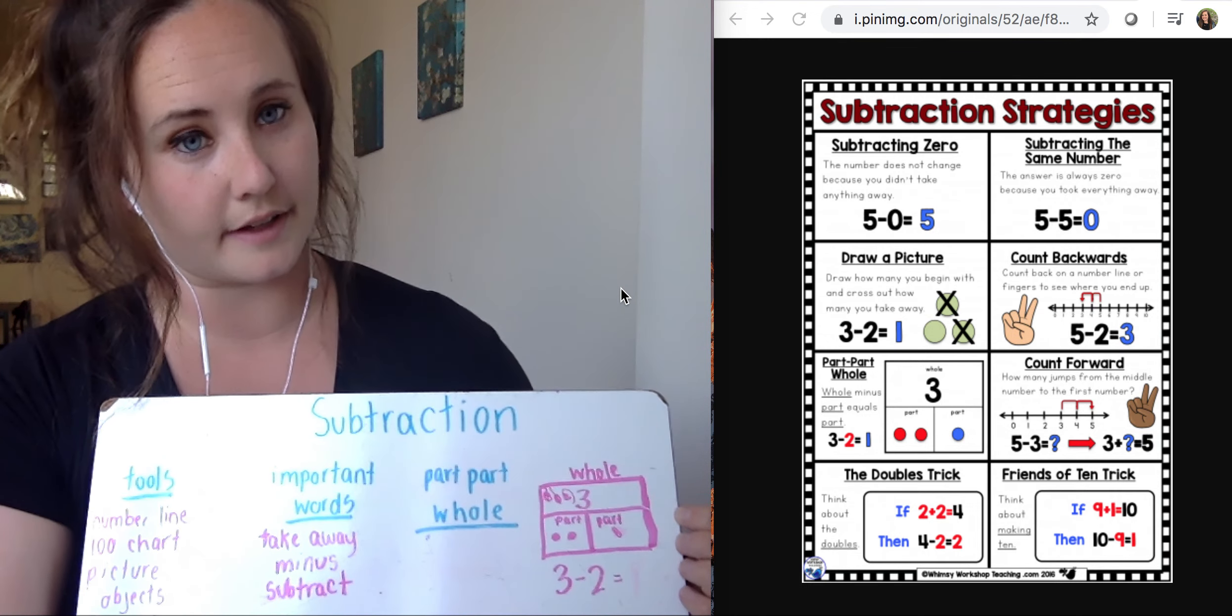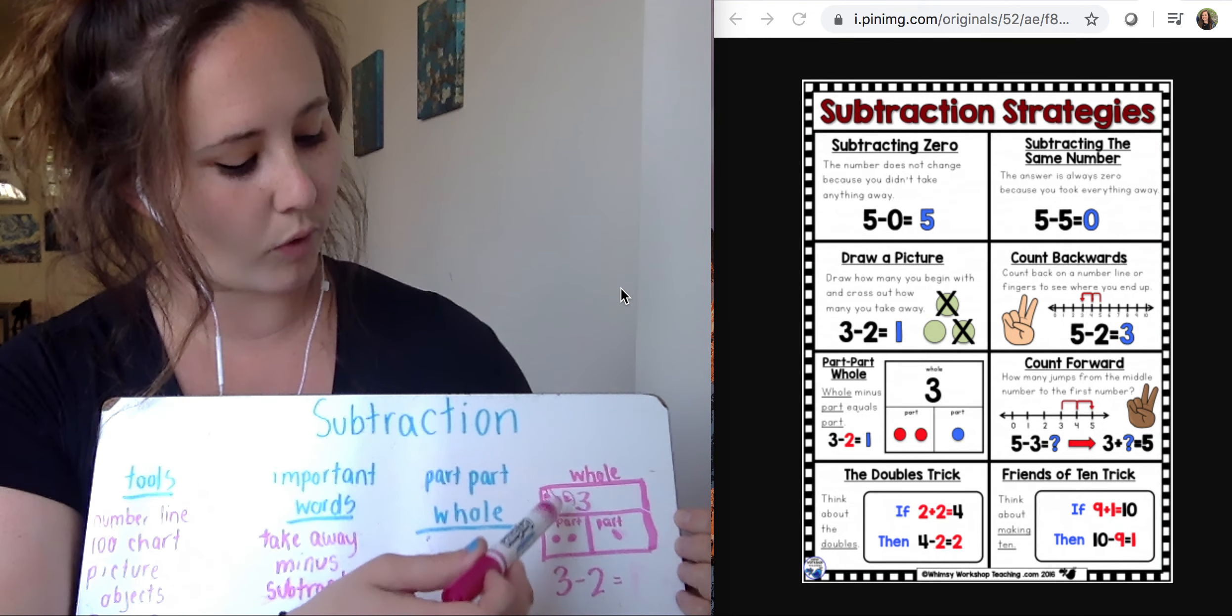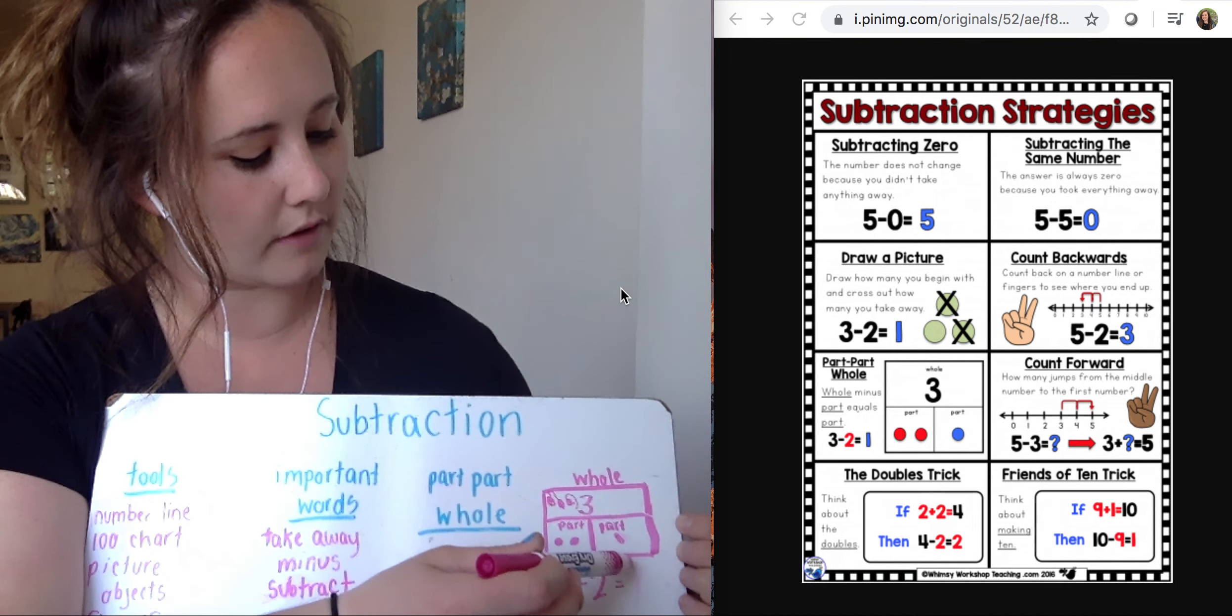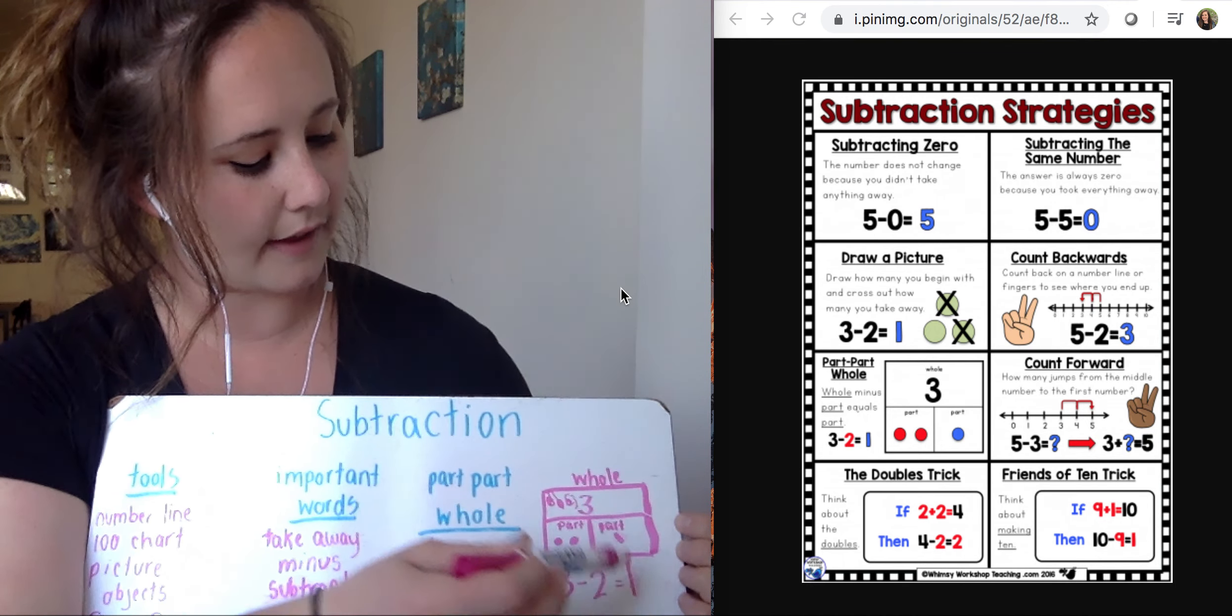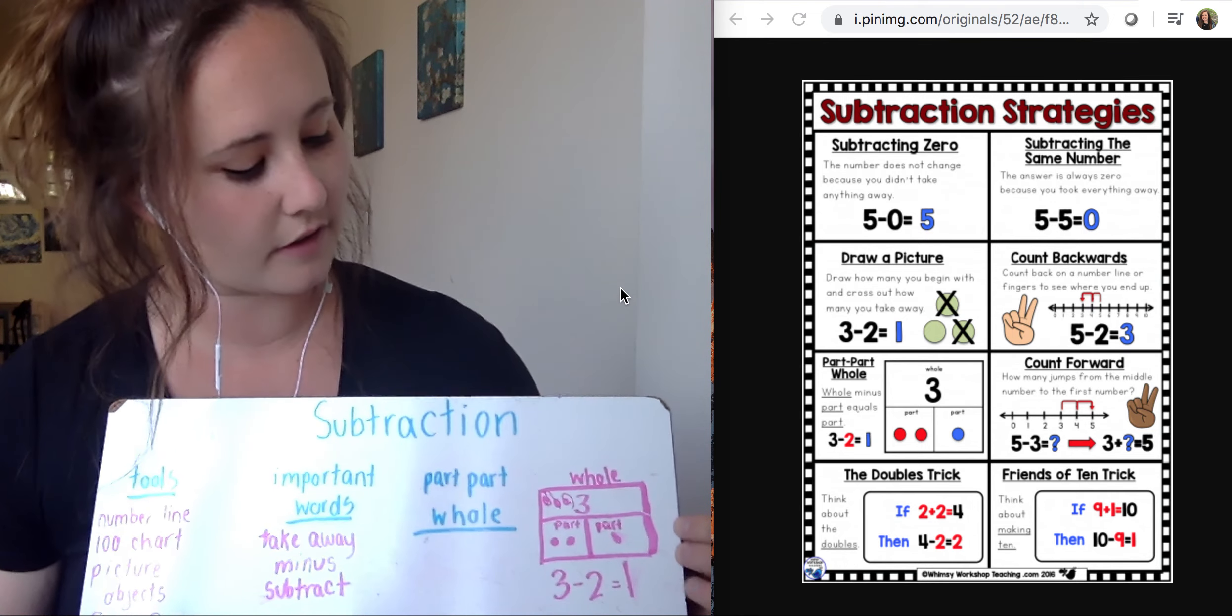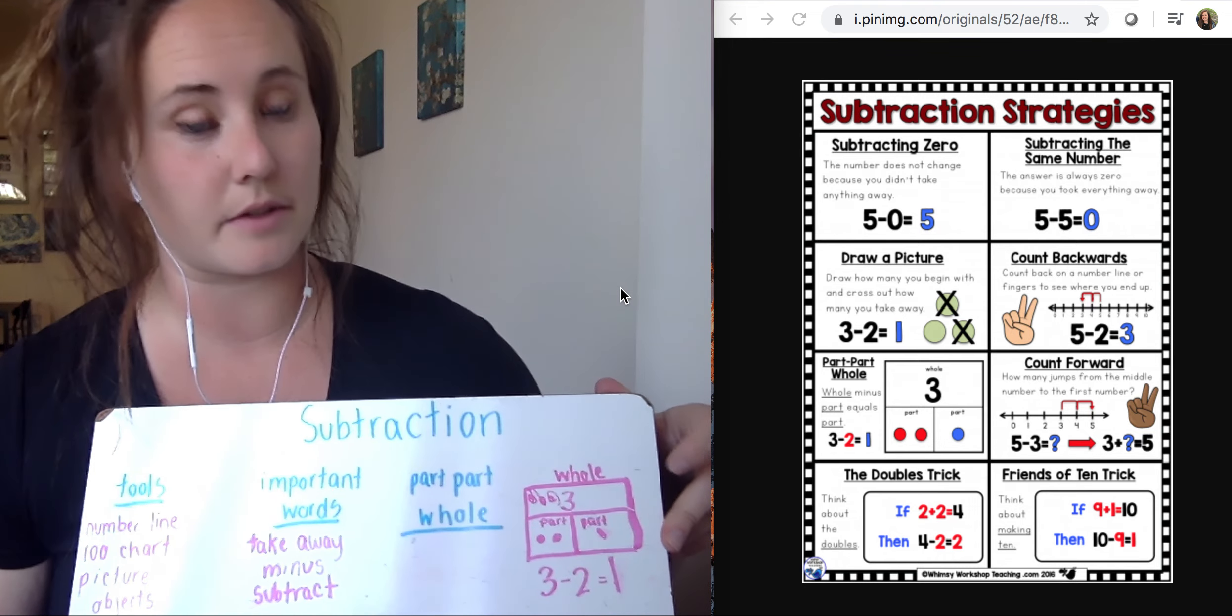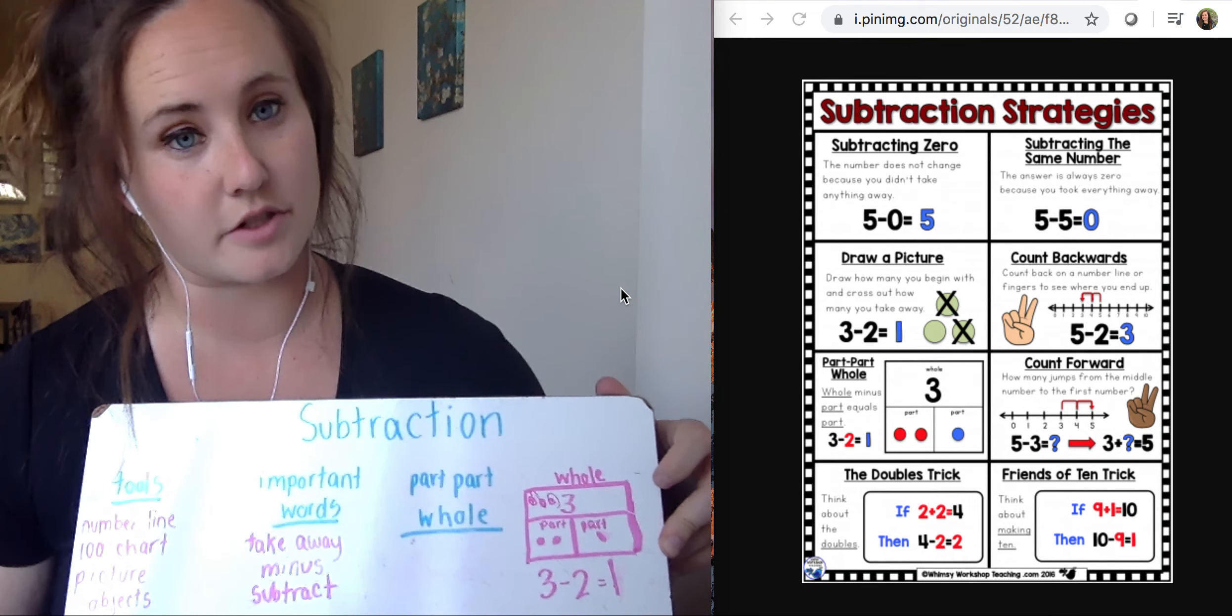So then I look at my number sentence again. And I have my whole three, take away the part two equals one. And that's how many I have left. And then if you want to double check your answer, you can take a look at your parts and make sure they equal your whole. Just like we talked about, you could work backwards to check your answer.